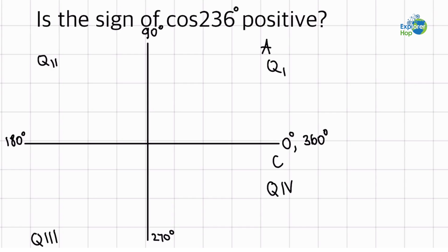And we have A that stands for all trigonometric ratios are positive in this quadrant, which is quadrant 1. And then in quadrant 2, we have S for sine, and we have T for quadrant 3, which is tan.